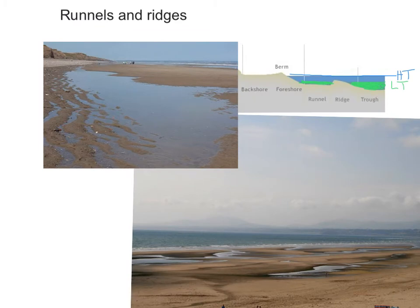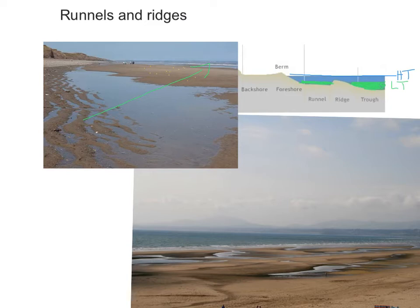Now let's look at runnels and ridges. It's important to remember that a sandy beach is rarely completely flat. As the tide starts to ebb or go out, it will encounter naturally raised areas of sand which force the waves to slow down, and any sand the waves are carrying as they retreat will be deposited, building up in height to create ridges. Any water left from the outgoing tide which is trapped between the ridge and the beach creates a runnel.